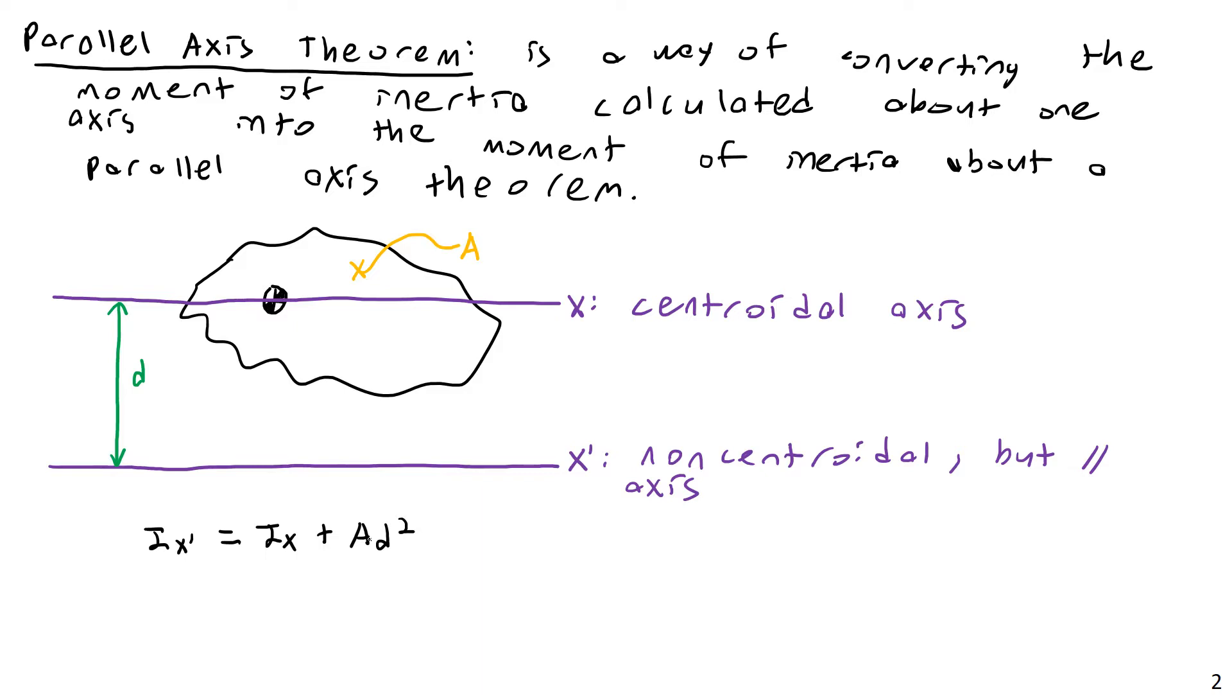Area is always going to be positive, and d, whether you looked at it upward or downward, usually d is just a distance rather than a displacement vector, but even if d was somehow negative, you're going to square it. And so this d squared term is always positive. Area by definition is always positive. So Ix prime is always going to be adding something to your Ix, which means this should sort of be a hint here.